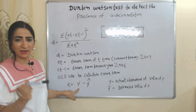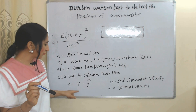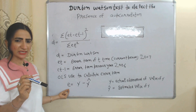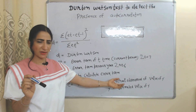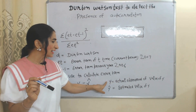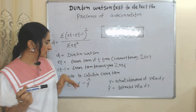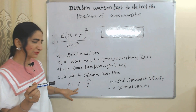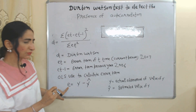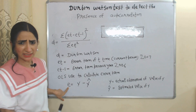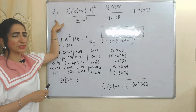As we know, OLS can calculate the value of ŷ and y, where y is our dependent variable. The formula to calculate e_t is: e = y minus ŷ, where ŷ is the estimated value of y and y is the actual observed value. So by using OLS we can calculate the value of e_t.